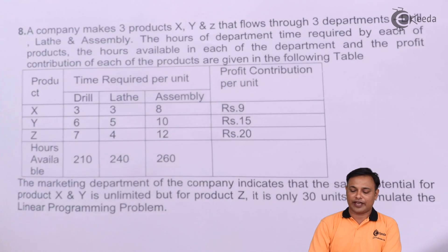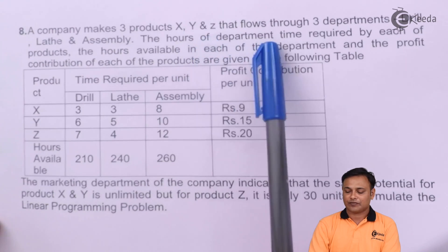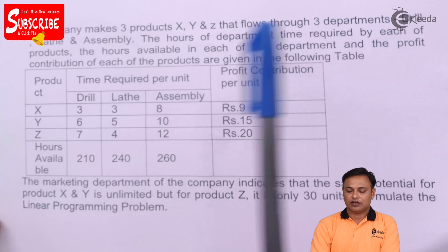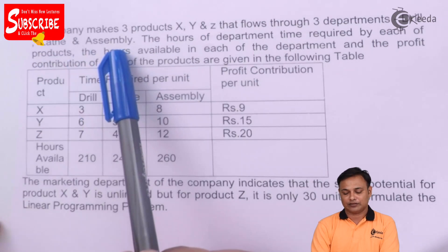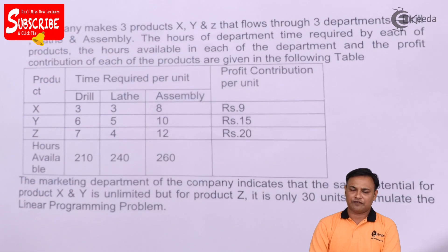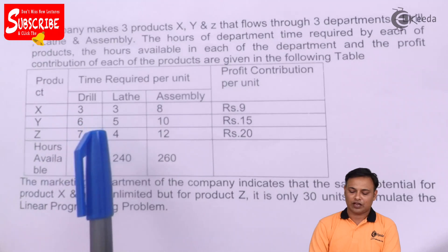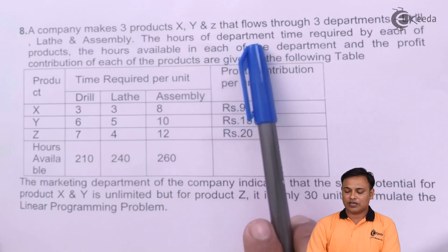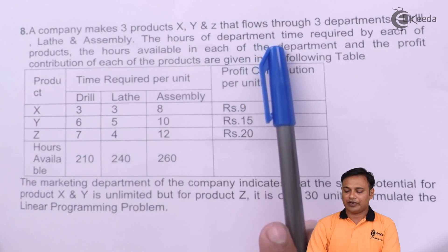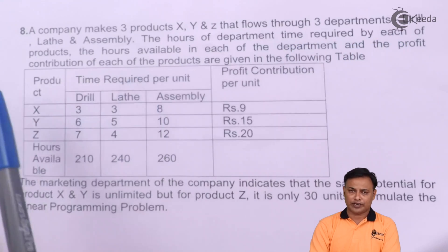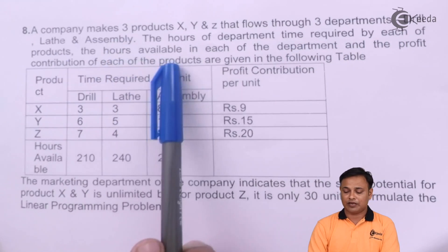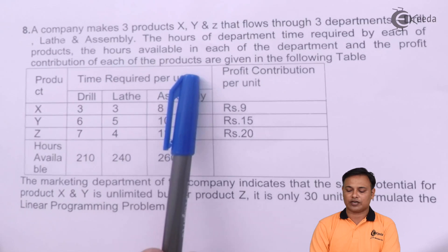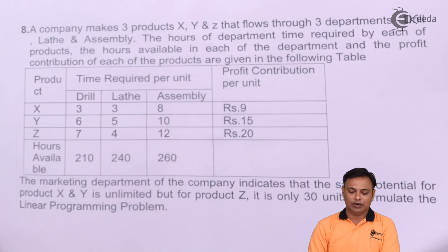A company makes three products X, Y and Z that flow through three departments: drill, lath and assembly. So there are three different processes — drilling, lathing and then assembly. The hours of department time required by each of the products, the hours available in each of the departments, and the profit contribution of each of the products are given in the following table.